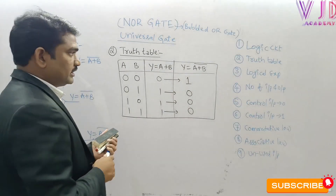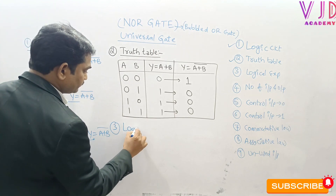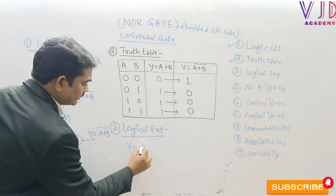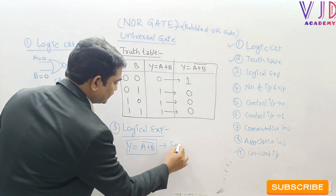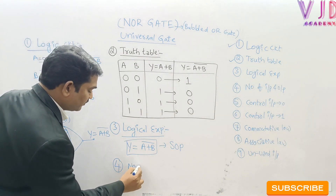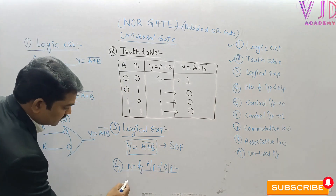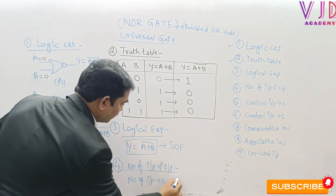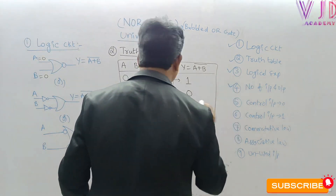The third point is the logical expression: Y = (A+B)̄. The fourth point is number of inputs and outputs: the NOR gate has two inputs and one output.